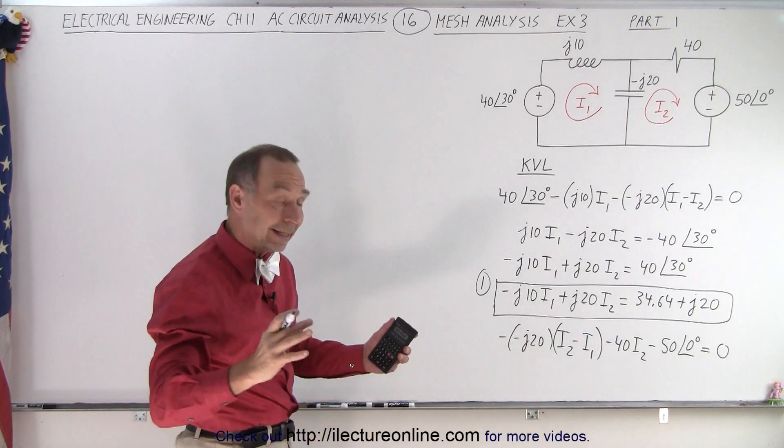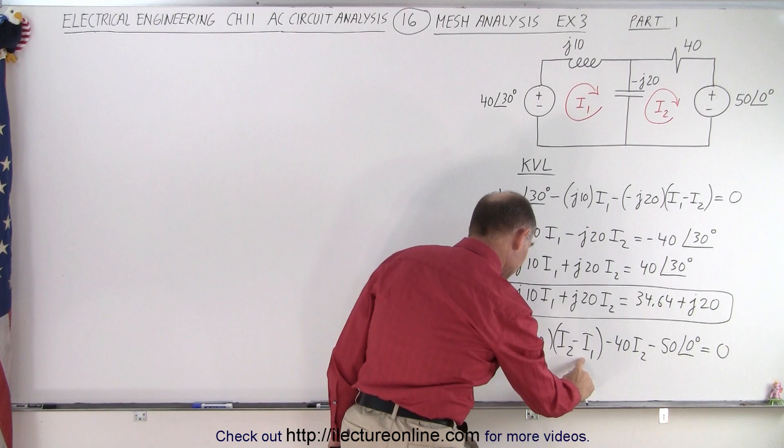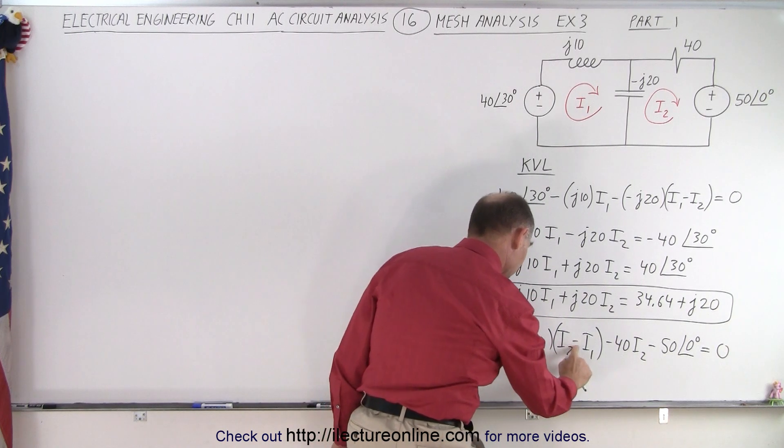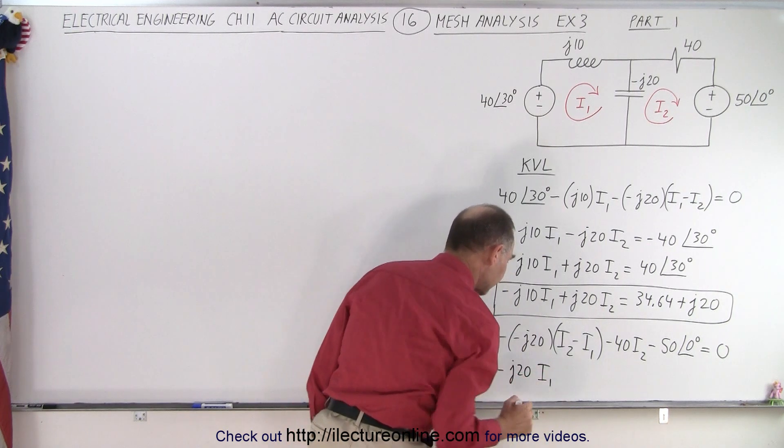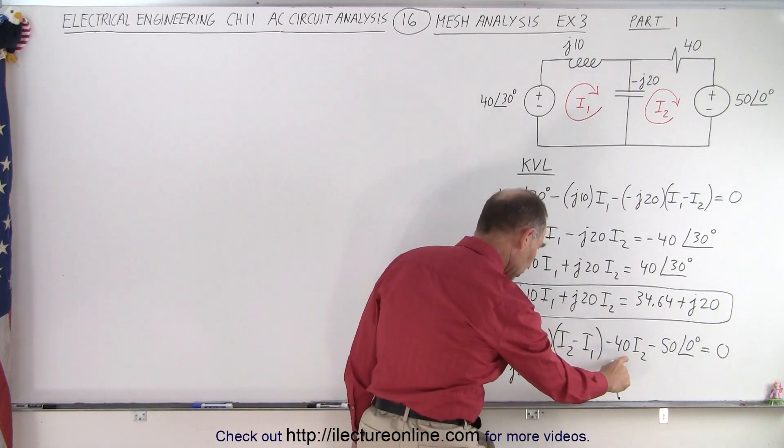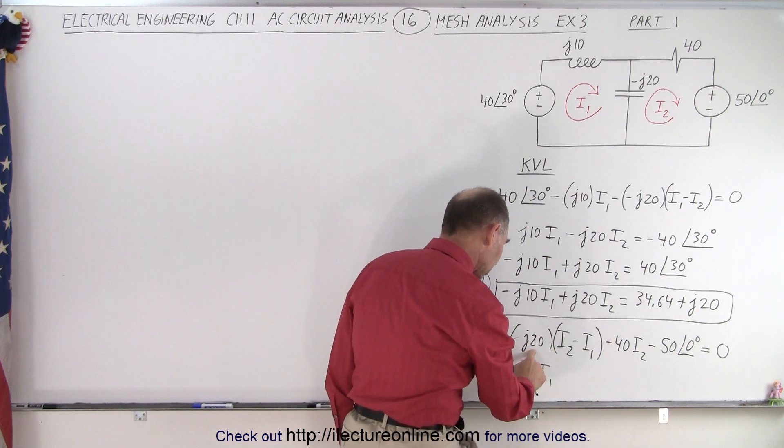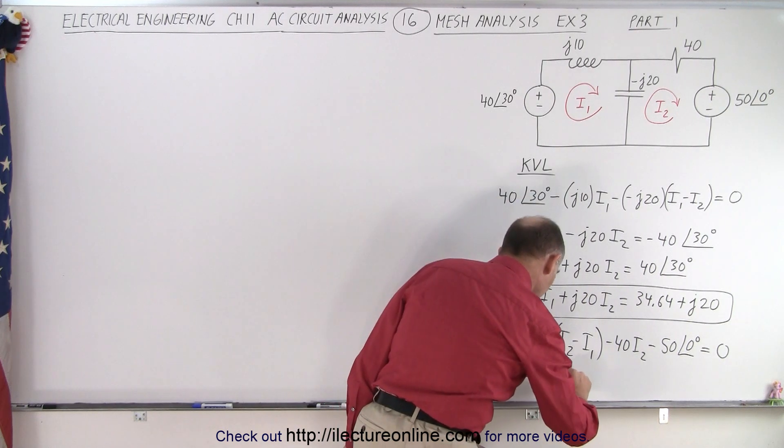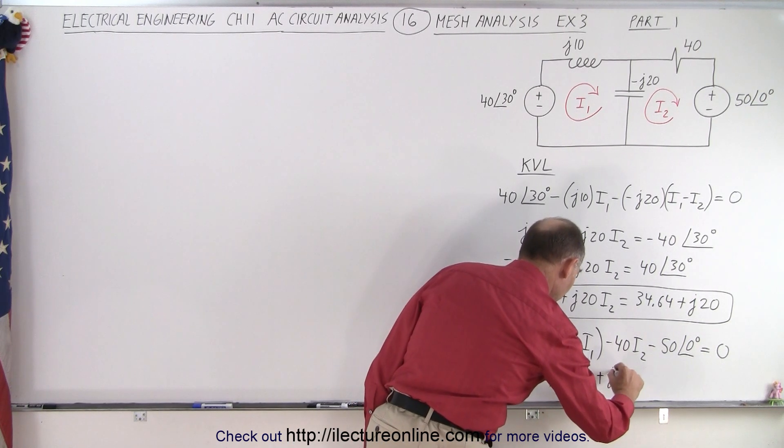Combining like terms. We have an I1 here, just one of them. We have a minus times a minus times a minus. That's three minuses. That's minus J20 times I1. For I2, we have a minus 40 and a minus times a minus J20. That's a plus J20 so that plus a minus 40 plus J20.